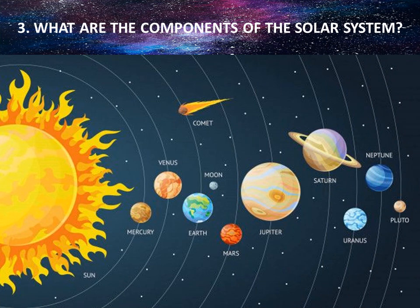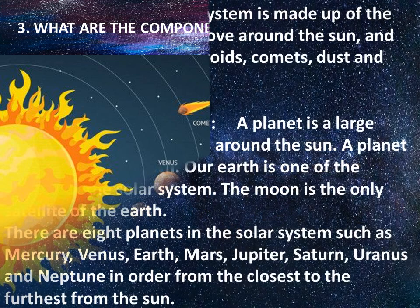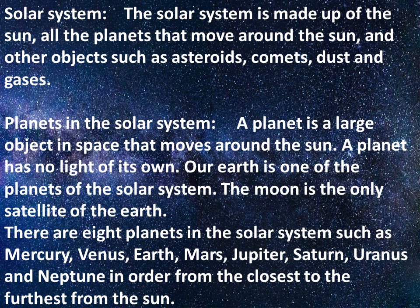Number three: What are the components of the solar system? Here is a picture of the solar system showing the sun, and the planets in order: Mercury, Venus, Earth, Mars, Jupiter, Saturn, Uranus, Neptune, and Pluto. The solar system is made up of the sun, all the planets that move around the sun, and other objects.